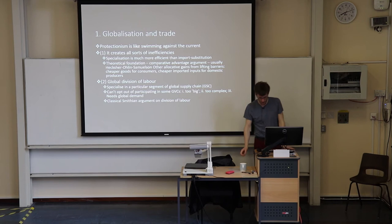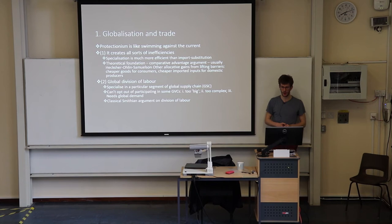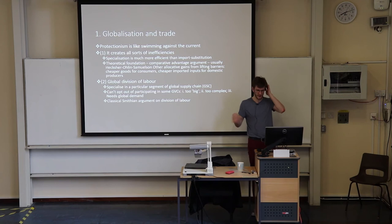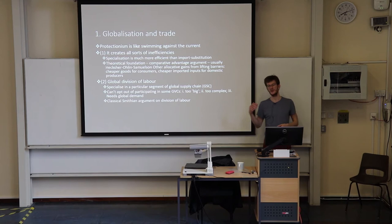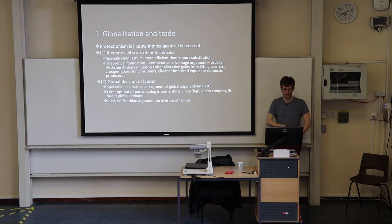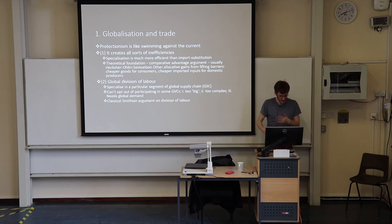If you erect barriers to trade and try to invest in industries up the value chain, you are trying to build something you're not good at. If you are Ghana, why try to make computers? It will take ages, cost a lot of money, and by the end of the day you won't be as good as the US or Japan. By erecting barriers, you make products more expensive for consumers and intermediate goods more expensive for producers. By lifting those barriers, you achieve higher allocative efficiency.